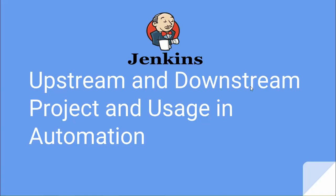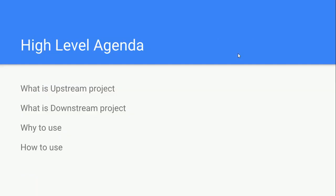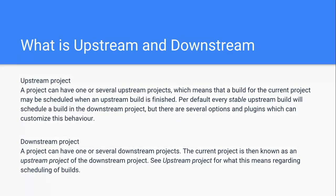We'll cover how we can use upstream and downstream in our automation, because this is a completely different term. We'll look at how to use it in Selenium, and not only in Selenium - you can also use it in DevOps as well. We'll talk about what is upstream project, what is downstream project, why to use and how to use. We'll start from their official documentation.